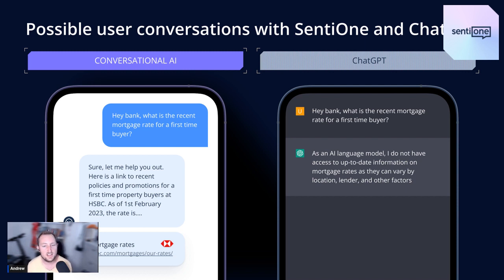Whereas on the right, unfortunately — and it's quite common in ChatGPT's case — it doesn't have the up-to-date information or the specific business information.